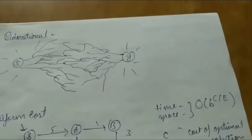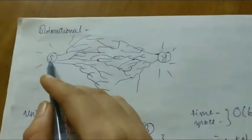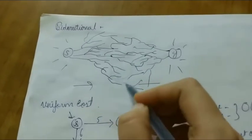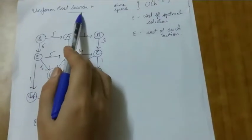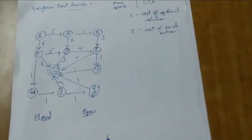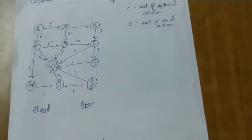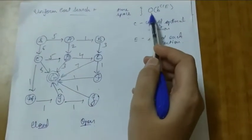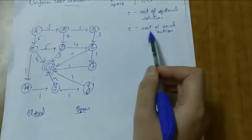In bi-directional search, both the start and goal nodes search in opposite directions — the start node searches forward and the goal node searches backward — and wherever the two searches meet, the path is found. Uniform cost search expands each and every node with the lowest path cost. It doesn't care about the number of steps but focuses only on the total cost. Its time and space complexity is O(b^(C*/ε)), where C* is the cost of the optimal solution and ε is the cost of each action.